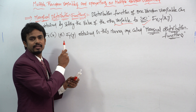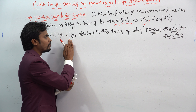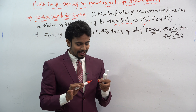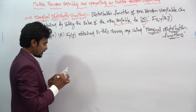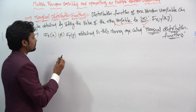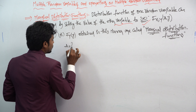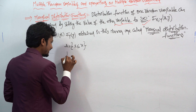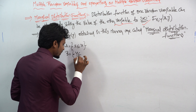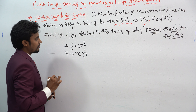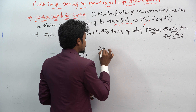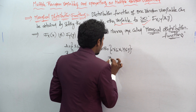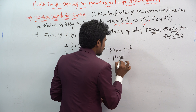Whenever we take them individually, that is said to be the marginal distribution functions. So Fx(x) or Fy(y) individually are called the marginal distribution functions. For example, let event A be the event that capital X is less than or equal to small x, and let event B be the event that capital Y is less than or equal to small y. Then A intersection B equals {X ≤ x} ∩ {Y ≤ y}.